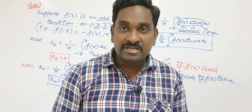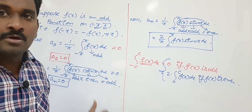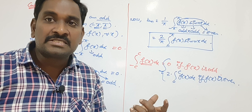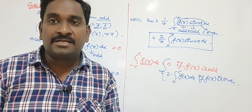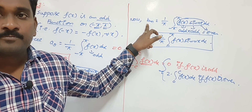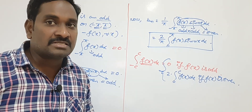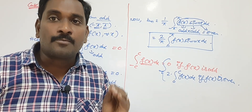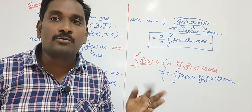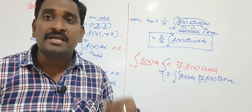From this derivation, if the given function is an odd function, a₀ becomes 0, aₙ becomes 0, and bₙ is a non-zero term. If we substitute all these values in the Fourier series formula, the required Fourier series has only sine terms when f(x) is odd. So it is enough to find only bₙ. bₙ is called the sine term; a₀ and aₙ are called the cosine terms.